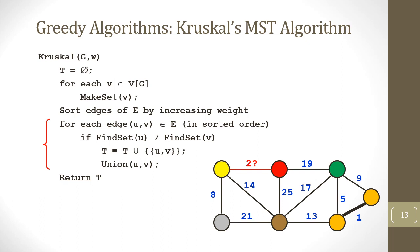Next, we select the edge of weight 2. The endpoints belong to different sets, so we add this edge to the MST and apply union. Then the edge of weight 5 is selected — its endpoints are in different sets, so we insert it into the MST and apply union. Next, we select the edge of weight 8. Both endpoints are in different sets, so we insert it into the MST and apply union, merging the endpoints into a single set.